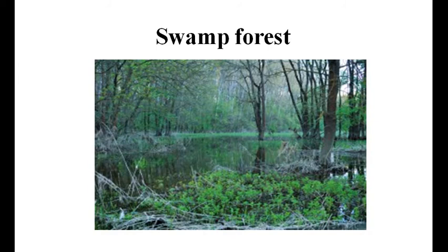In swamps, various aquatic and semi-aquatic grasses like Panicum, Dactyloctenium, Hygroryza and species of Scirpus, Cyperus are found. Besides Ceratopteris, Azolla, Salvinia, Marsilea and among flowering plants, different species like Ficus, Dracaena, Barringtonia, Cephalanthus are commonly found at the edge of such swamps.